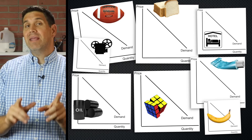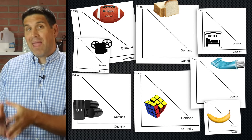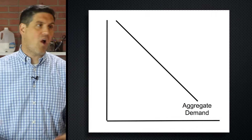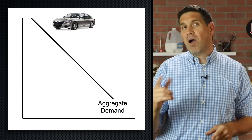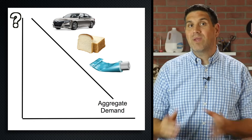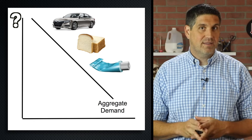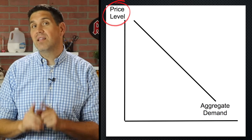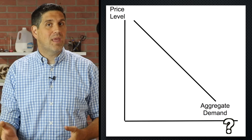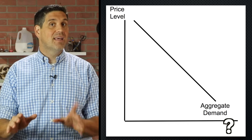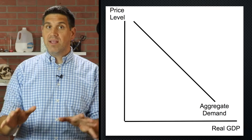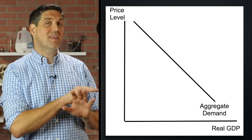By far, the most important graph in a macroeconomics class is aggregate demand and aggregate supply. Aggregate means add it all together. So the aggregate demand curve is just all the different demand curves — all the different goods and services in the economy added together. But since we're talking about cars and bread and toothpaste, we can't put price on the y-axis. Instead, we're going to put price level. And down here on the x-axis, we can't put quantity because we're looking at all the goods and services in the economy — and that is real GDP. So here it is: this is the demand for everything in the entire economy.